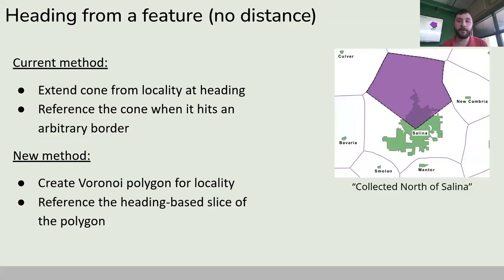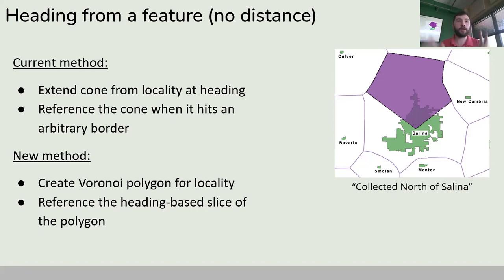In that same vein, we have heading from a feature. For a specimen collected north of Salina, the current best practice is to start a cone at the locality being described — Salina — and just extend it arbitrarily until it hits some kind of border, without defining what kind of border or how to decide when to stop. Using Voronoi polygons, we can literally define that border — the space that belongs to or is near Salina. Then we take our cone and slice out that section. The purple shaded region is the area that is north of Salina, not southeast of Culver and not northwest of New Cambria — it's north of Salina. Then you would georeference this purple shaded region.